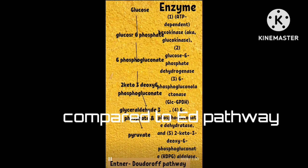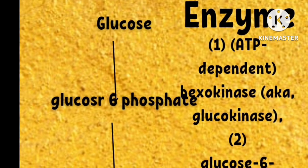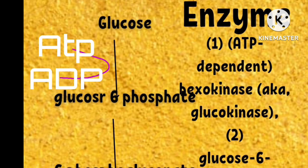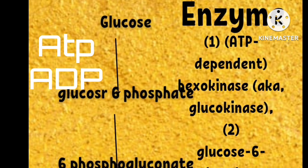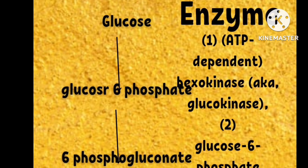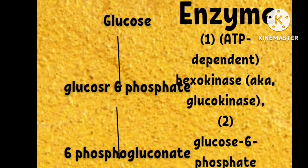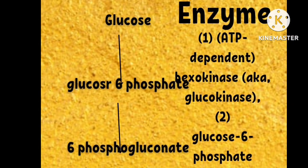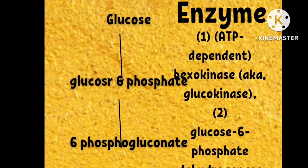In the first step, glucose is converted into glucose-6-phosphate, where ATP is converted into ADP. The enzyme used for this conversion is hexokinase.